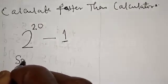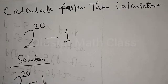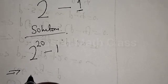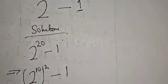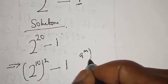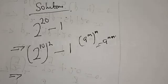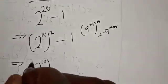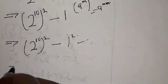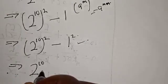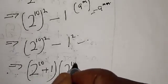Solution. We have 2 raised to power 20 minus 1. Now, 2 raised to power 20 can be expressed as 2 raised to power 10, all squared, minus 1. Using the identity a raised to power m raised to power n, this is a difference of two squares, which gives us 2 raised to power 10 plus 1, into 2 raised to power 10 minus 1.